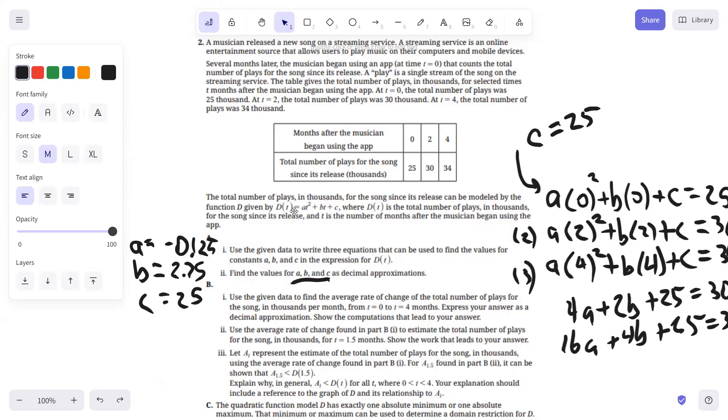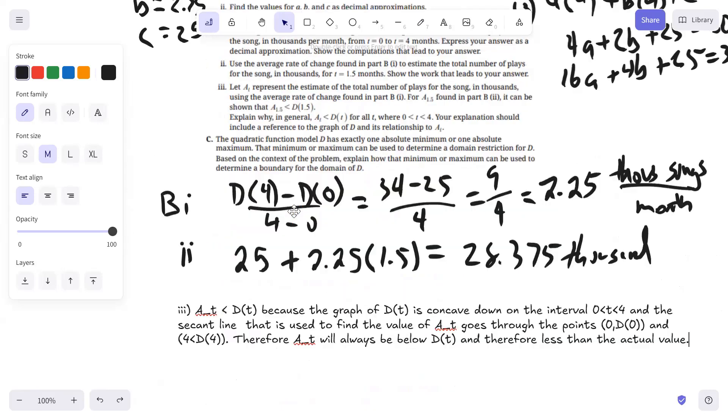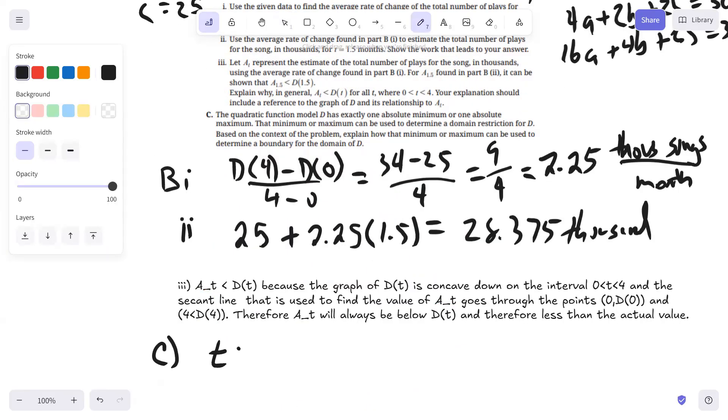So at the max value, that's going to be the last point where this function is going to be valid because after that point, the function is going to then begin decreasing. If we find the T value at which the function has a max, then that is going to be the right endpoint of our domain restriction. Also, you can't have less than zero months after the musician began using the app. So we know the domain is going to be between zero and whatever T value produces that max.